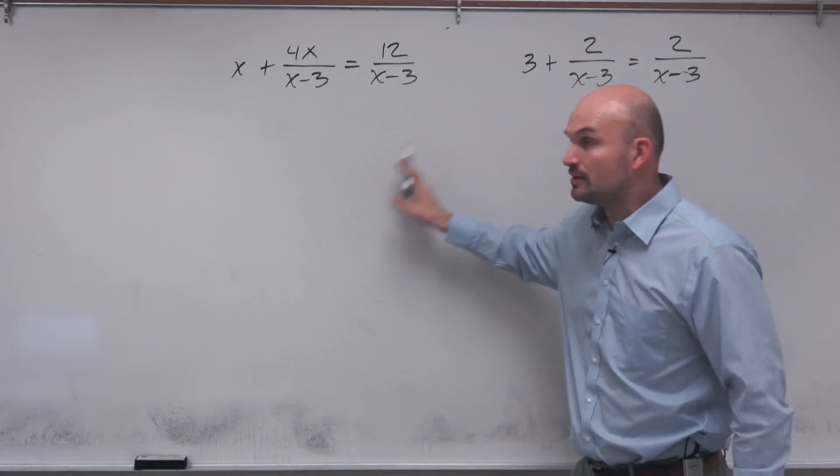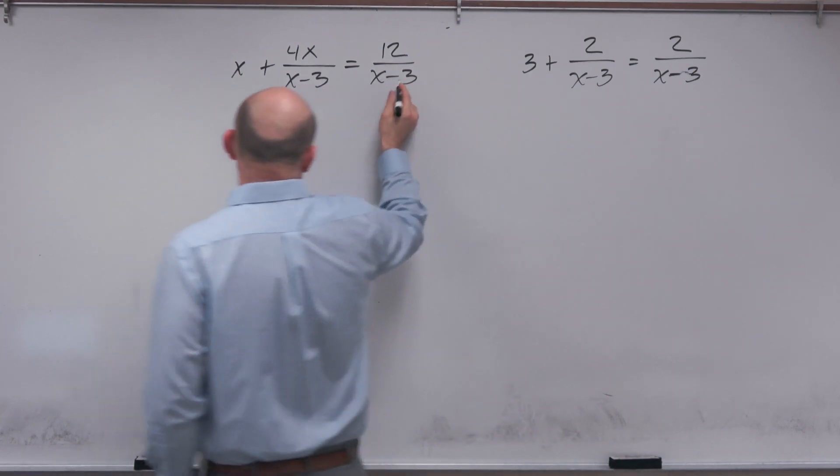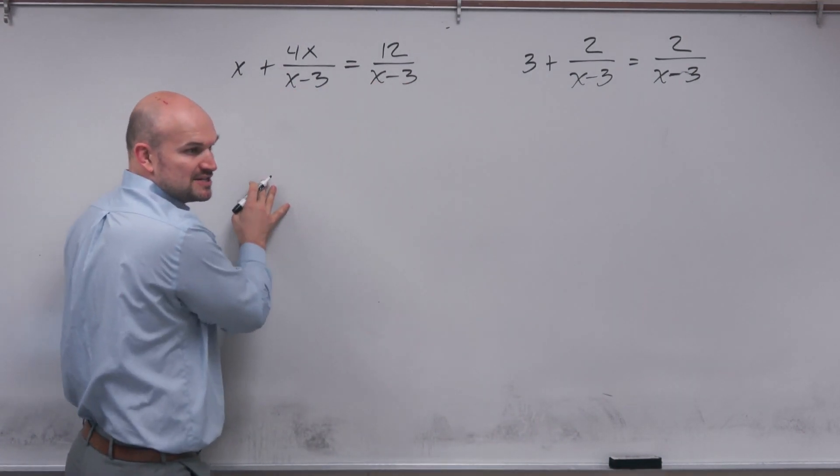So to get my variable off the denominator what I'm going to do is I'm going to identify my LCD and you can see here that my least common denominator is going to be x minus 3.